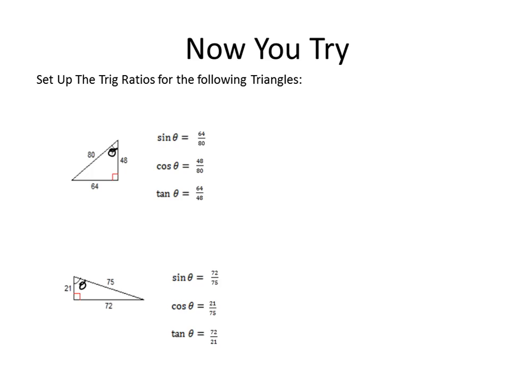After watching this video, you should be able to look at a right triangle given a theta and set up the trig ratios. You need to know that sine of theta equals opposite over hypotenuse, cosine of theta equals adjacent over hypotenuse, and tangent of theta equals opposite over adjacent.